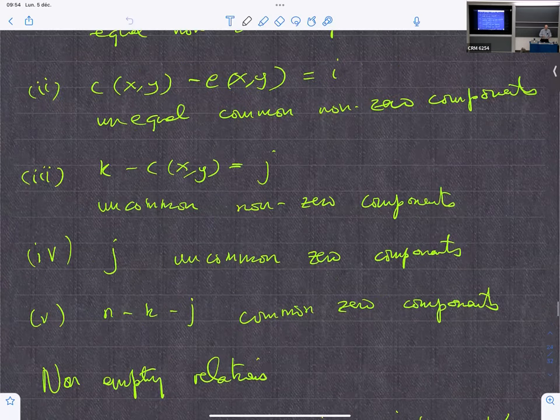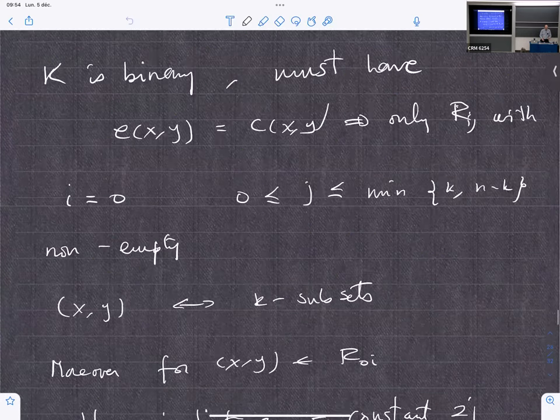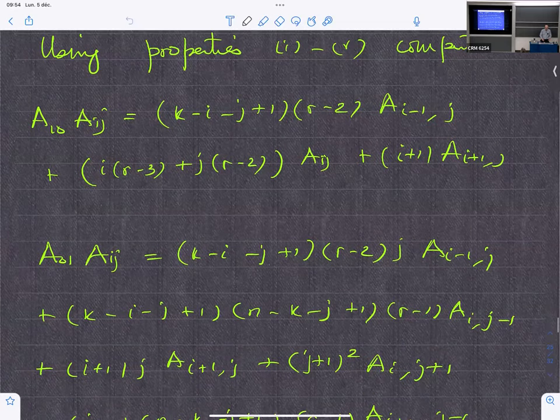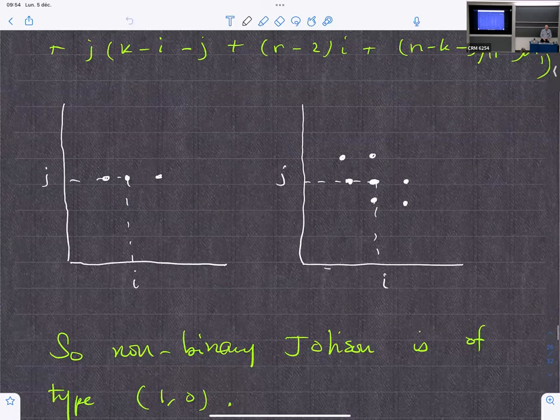And then there's a similar generalization of the Johnson scheme which can be defined. And I think I'll leave it to that. So once you've defined the scheme, you can work out the recurrence relation.